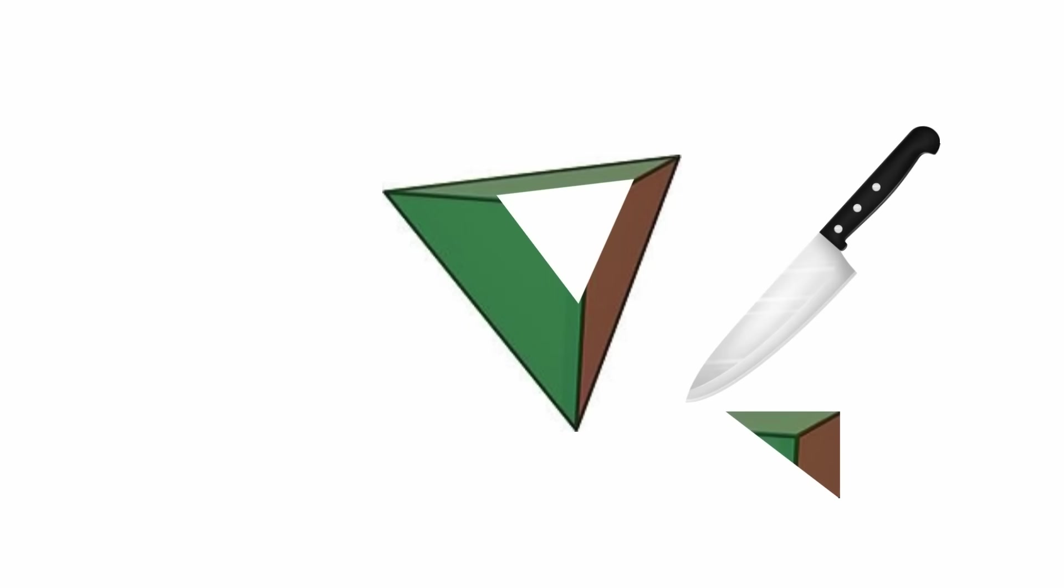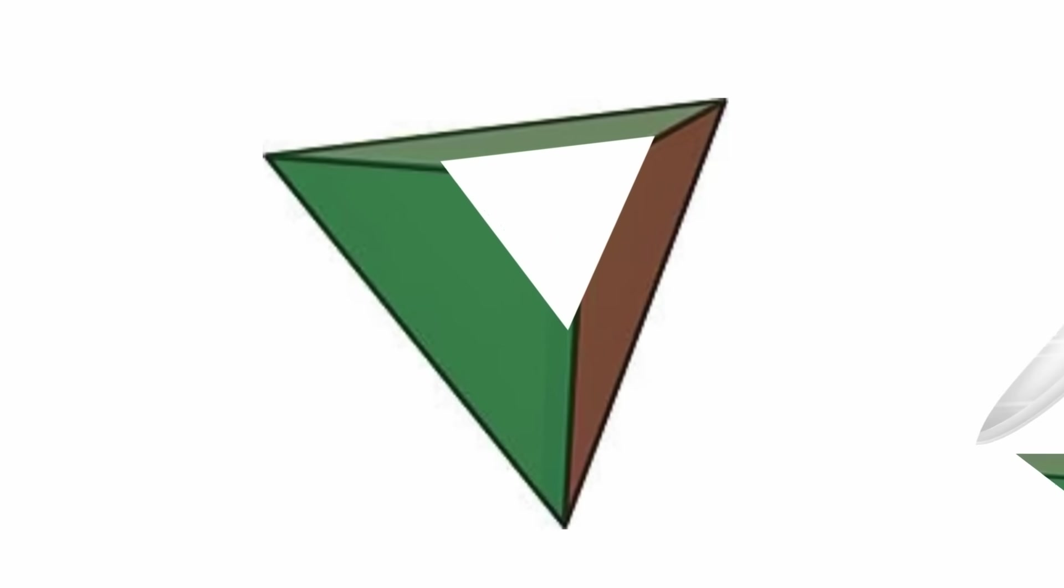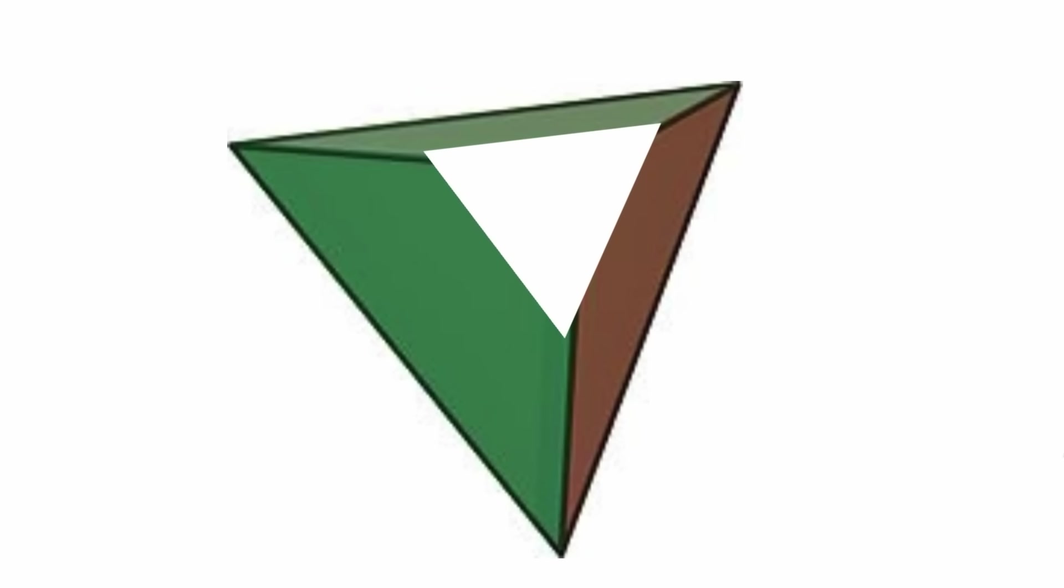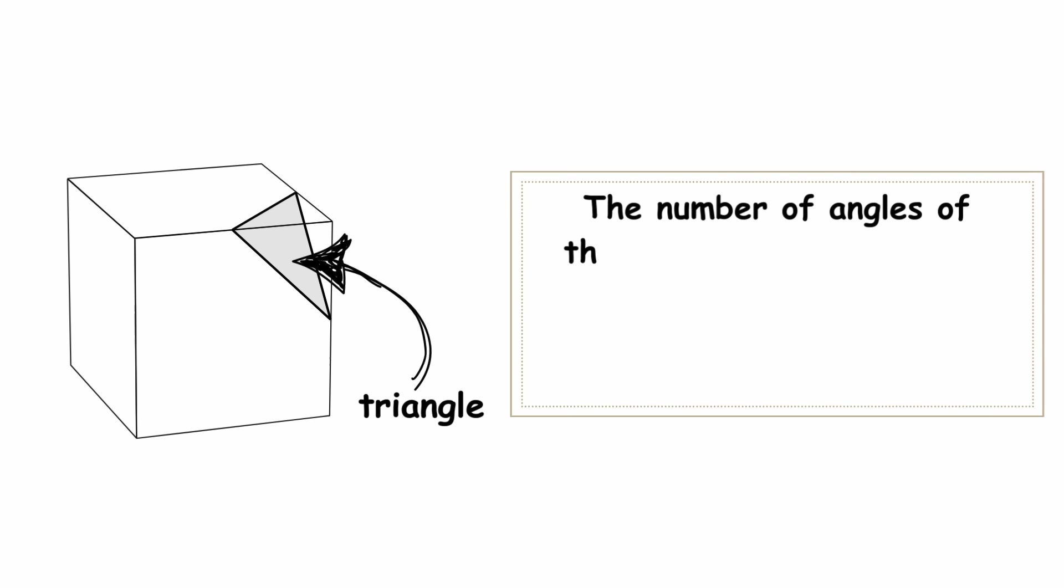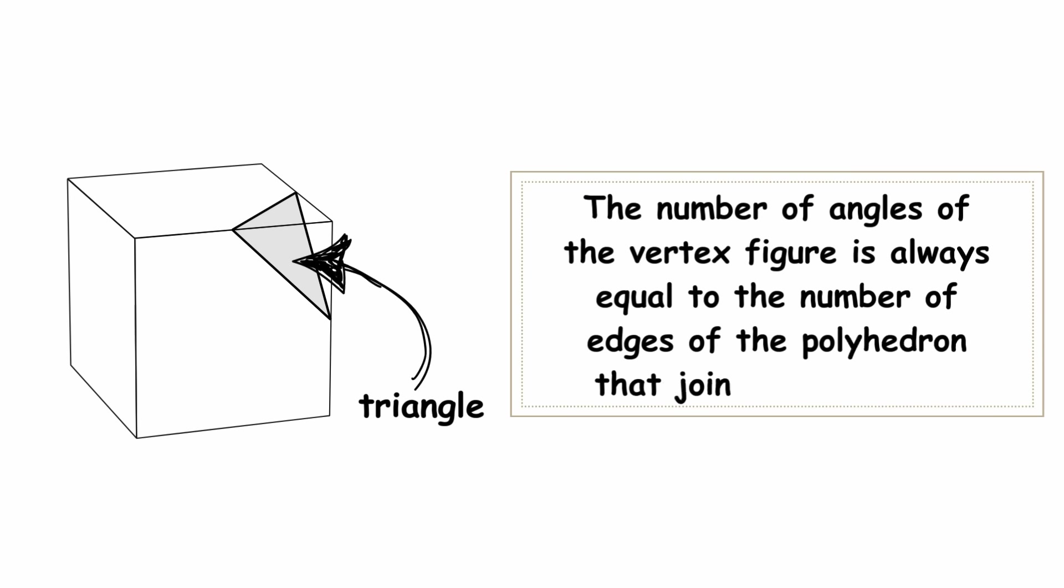Imagine cutting off a corner of a polyhedron and looking at the cross-section. The shape you see is known as a vertex figure. For instance, if you cut off the corner of a cube, the shape you get is a triangle. The number of angles of the vertex figure is always equal to the number of edges of the polyhedron that join at the vertex.